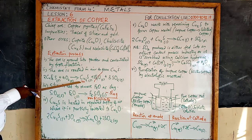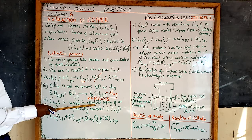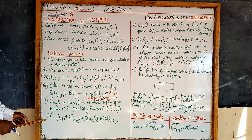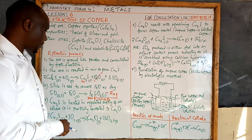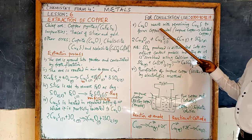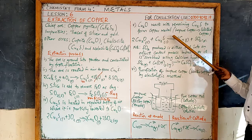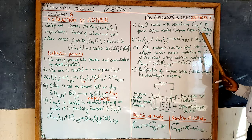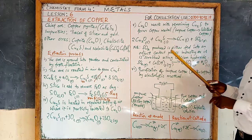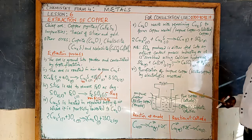Now to get copper from copper(I) sulphide: copper(I) sulphide is heated in a regulated supply of air where it is partially oxidised to copper(I) oxide. Not all of the copper(I) sulphide is oxidised — only part of it. Then the copper(I) oxide formed reacts with the remaining copper(I) sulphide to form copper metal. This copper metal is called blister copper, because the sulphur dioxide produced creates pimple-like blisters on top of the copper.